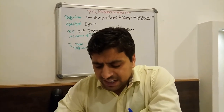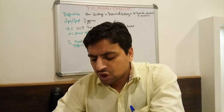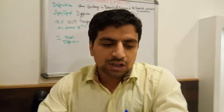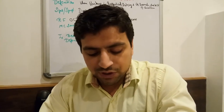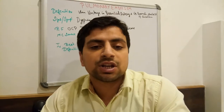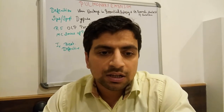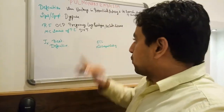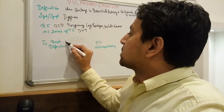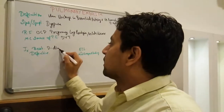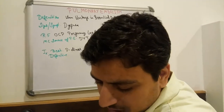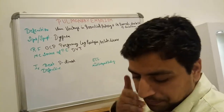Next question from AIIMS 2005: D-Dimer is the most sensitive diagnostic test for — option A: pulmonary embolism, option B: acute pulmonary edema, option C: cardiac tamponade, option D: acute myocardial infarction. The answer is A — pulmonary embolism. If we want to rule out pulmonary embolism, the best test is D-Dimer. Remember: D-Dimer is the best investigation for pulmonary embolism.